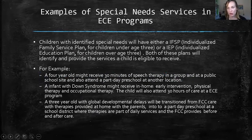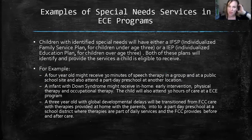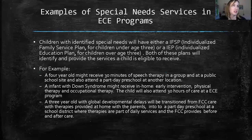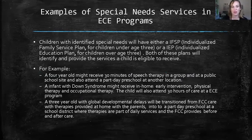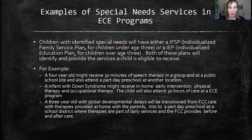What would this look like in an early childhood education program? A child with an identified special need — it could be a speech delay, Down syndrome, cerebral palsy, clubfoot, or hip dysplasia — will either have an IFSP (individualized family service plan) if they're under age three, or an IEP if they're older. Both plans will identify and provide the services the child is eligible to receive. For example, a four-year-old might receive 30 minutes of speech therapy at a public school and also attend a part-day preschool at another location.